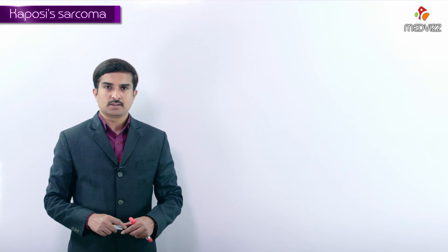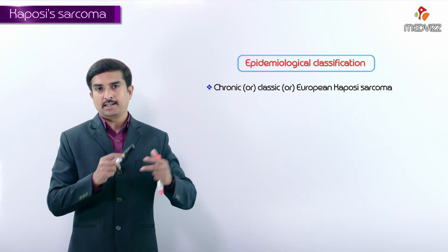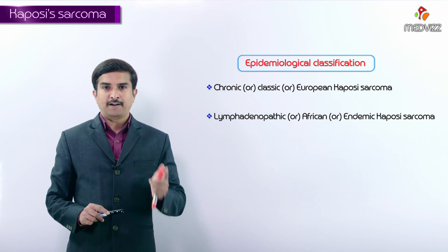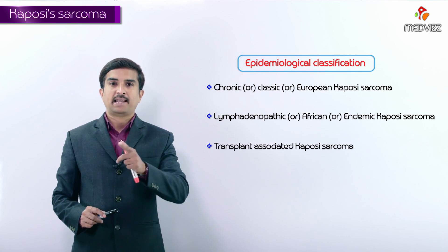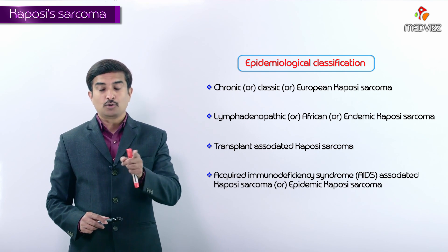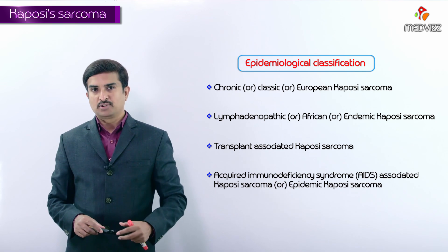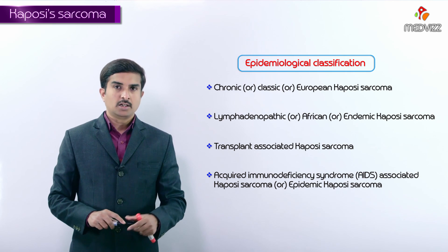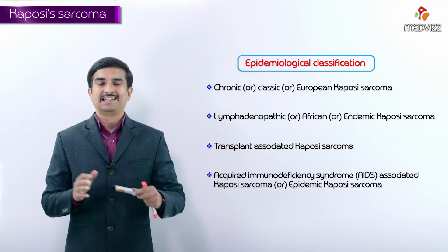We are going to discuss the epidemiological classification of Kaposi sarcoma. There are four types: the first is called chronic, also called classic or European Kaposi sarcoma; the second is lymphadenopathic, African, or endemic Kaposi sarcoma; the third is transplant-associated Kaposi sarcoma; and the last is AIDS-associated or epidemic Kaposi sarcoma. We will discuss all four types in detail.